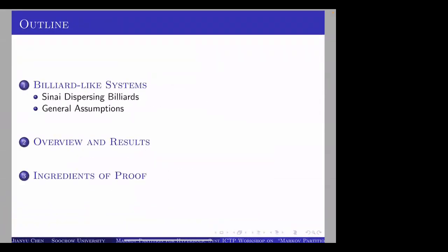This is the outline of my talk. First, the setting of uniform hyperbolicity with singularities is kind of complicated. There are five standard assumptions extracted from a paper by Chernoff and Hong Kong Zhang. I would like to give everyone a warm-up on why these assumptions are needed, so I will recall something about the Sinai dispersing billiards. Then I'll give the general assumptions, a short overview on current results related to Markov partitions, Young towers, and statistical properties for billiard-like systems, and then present our main results and proof ingredients.